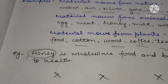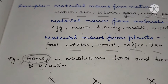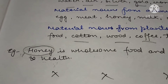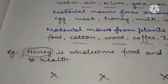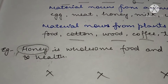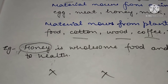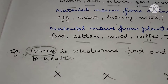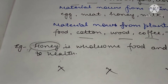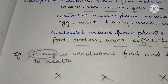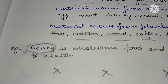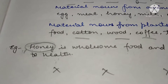Proper noun is very clear, abstract noun is very clear, and collective noun is also very clear — you can figure out where the collective or abstract or proper noun is. The only problem comes with your material noun and common noun.